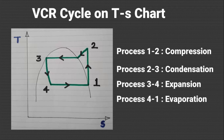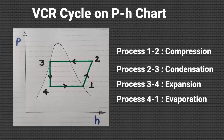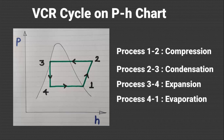The same vapor compression cycle on the pH chart is shown in the next slide. Here the specific enthalpy is plotted on the horizontal axis and pressure is plotted on the vertical axis. The same 4 processes are shown in the graph. Process 1 to 2 is the compression process where pressure increases and work is done on the refrigerant, so enthalpy also increases. From 2 to 3 is the condensation process where the refrigerant condenses at constant pressure. From 3 to 4 is the throttling process, which is isenthalpic and shown as a vertical line. From 4 to 1 is constant pressure evaporation of refrigerant in the evaporator.